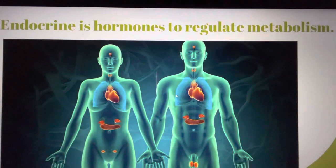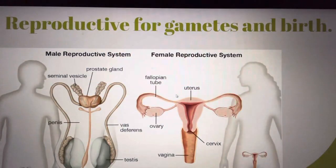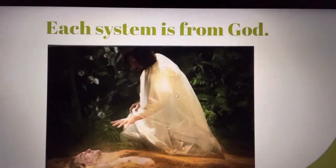Endocrine is hormones to regulate metabolism. Reproductive for gametes and birth. Each system is from God.